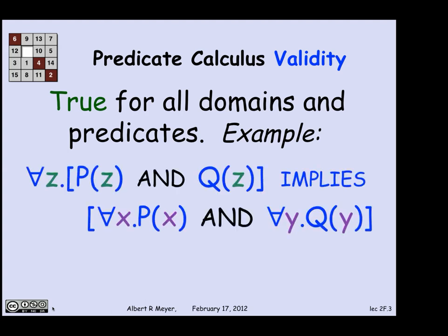Let's look at a concrete example. Here is a valid formula of predicate calculus. It's mentioning predicates P and Q. It's of the form of a proposition because it's saying something about every possible z in the domain and every possible x and every possible y. To make sense out of this formula, we need to know what's the domain that x, y, and z range over, and what exactly do P and Q mean?